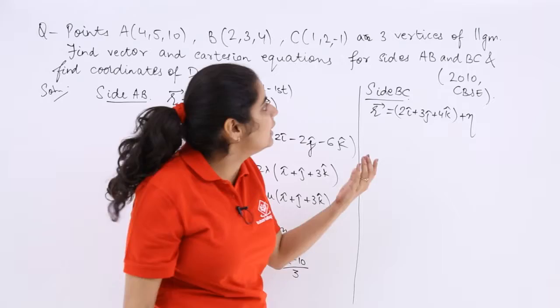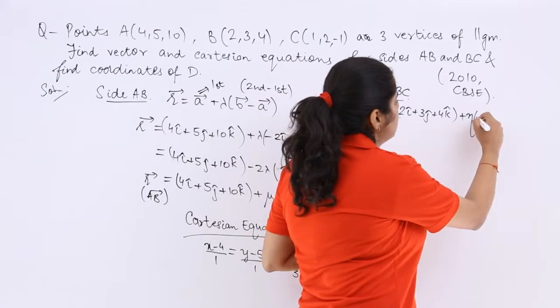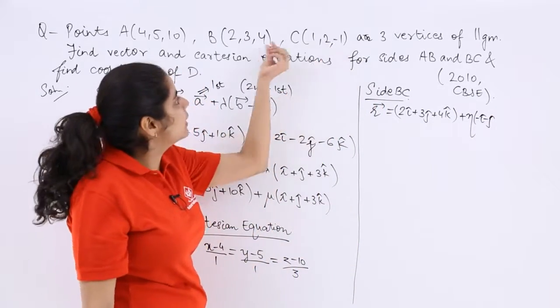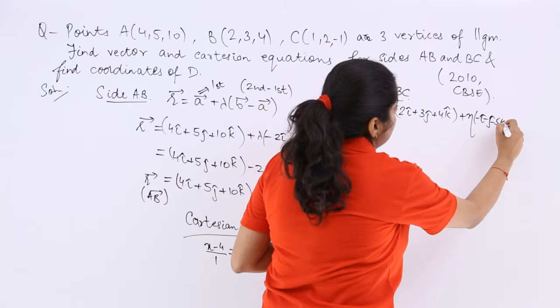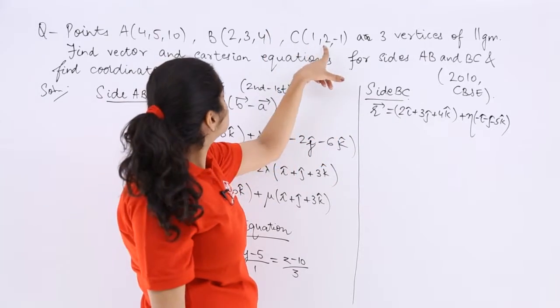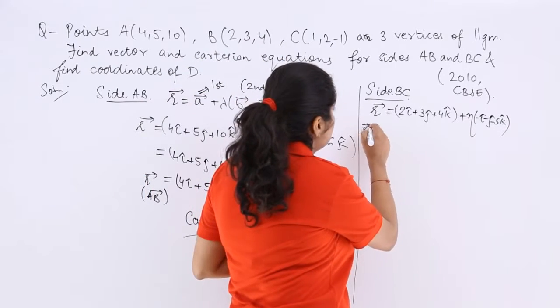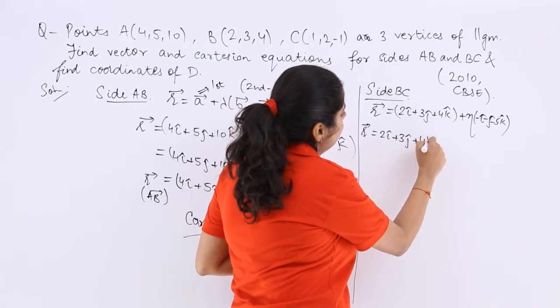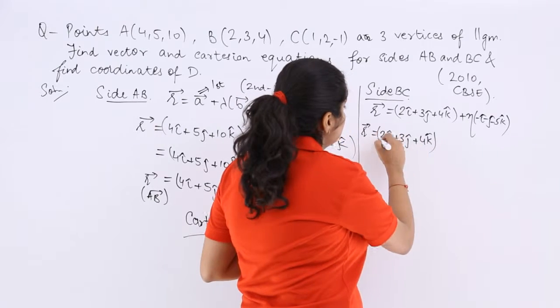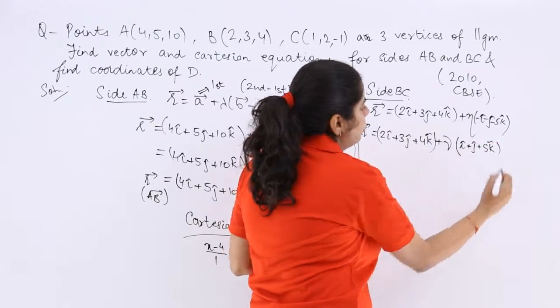For side BC, what is the first? B. So 2i plus 3j plus 4k plus again lambda times or any scalar times, we had used lambda mu here, let us use n. Then you have to subtract. So 1 minus 2 is minus 1, so minus i. Then 2 minus 3 is again minus j. Then minus 1 minus 4 is minus 5k. So R is equal to 2i cap plus 3j cap plus 4k cap. Here you can take minus sign common and then substitute with another constant. So I have taken minus sign. So I have i, j and 5k.